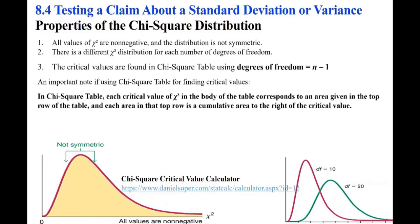All values of chi-square are non-negative and the distribution is not symmetric. There is a different chi-square distribution for each number of degrees of freedom. The critical values are found in the chi-square table using degrees of freedom n minus 1. Each critical value in the body of the table corresponds to an area given in the top row, and each area in that top row is a cumulative area to the right.